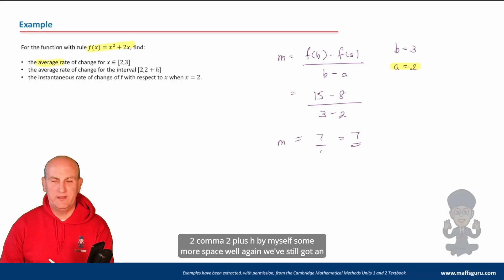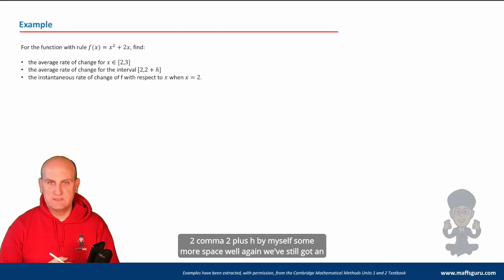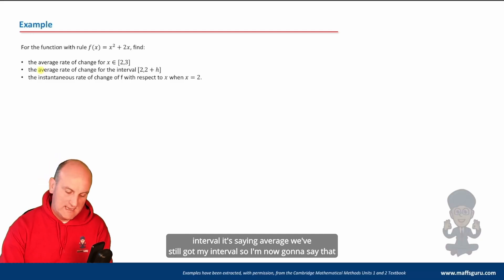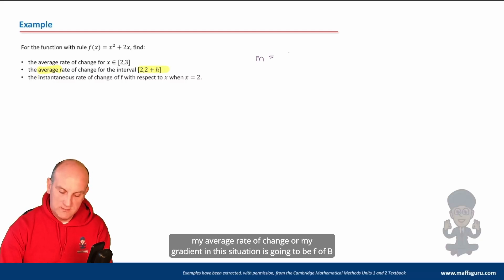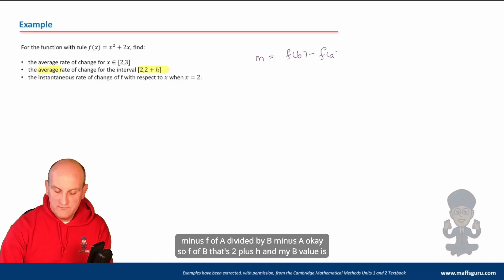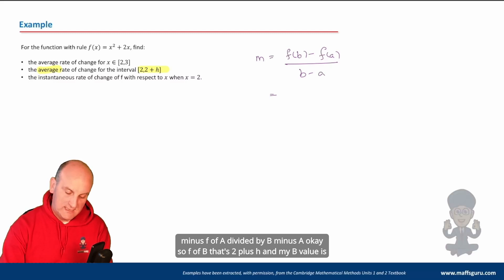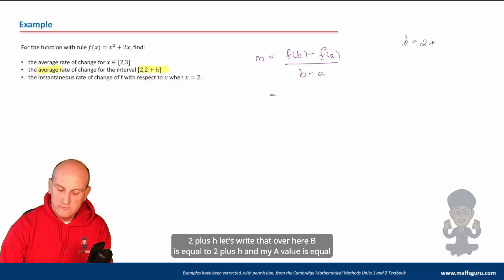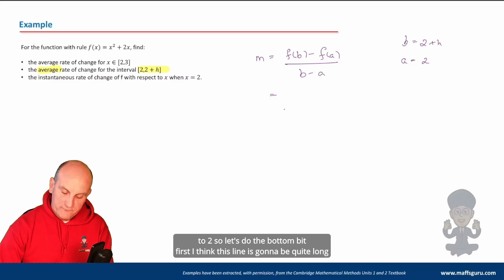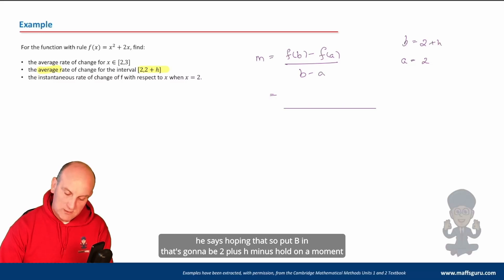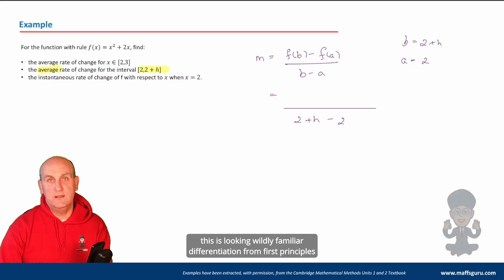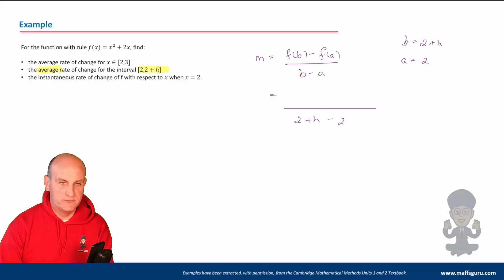Now the average rate of change for the interval two to two plus h. Again we've still got an interval, so I'm going to say the average rate of change or gradient is f(b) minus f(a) divided by b minus a. Here f(b) is f(2+h), so b equals two plus h, and a equals two. This is looking wildly familiar — differentiation from first principles comes screaming back at us.